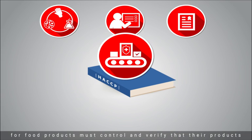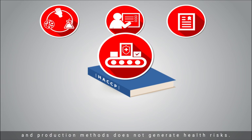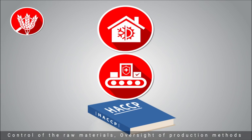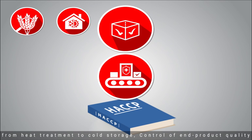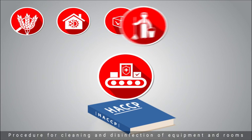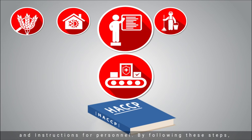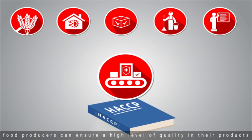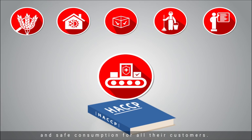ISO 22000 enforces that producers of food products and ingredients for food products must control and verify that their products and production methods do not generate health risks. This is accomplished through control of raw materials, oversight of production methods from heat treatment to cold storage, control of end product quality, procedures for cleaning and disinfection of equipment and rooms, and instructions for personnel. By following these steps, food producers can ensure a high level of quality in their products and safe consumption for all their customers.